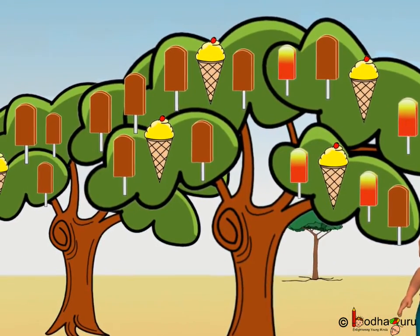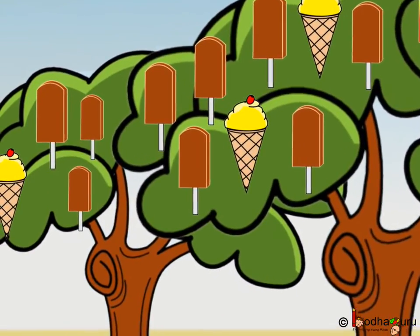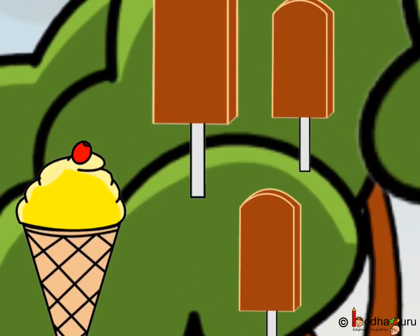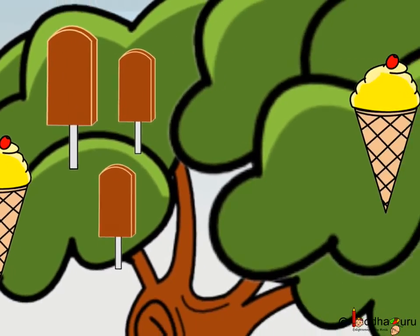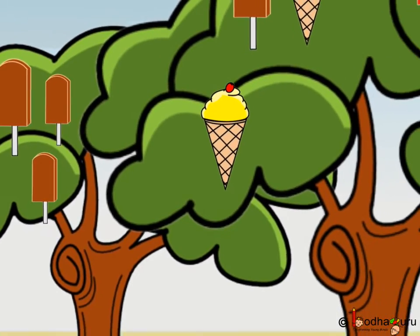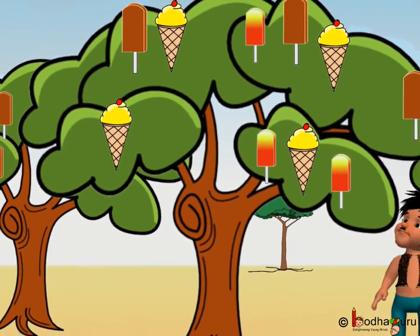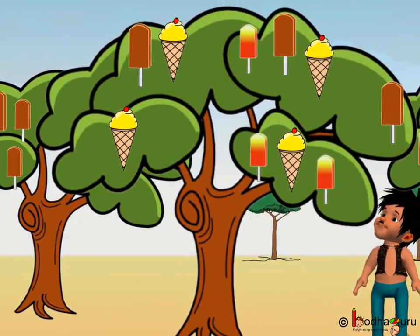Wow! A tree of ice creams, that too chocolate bars. This is Wonderland. Look how many ice creams Mola got. Let us do the counting.